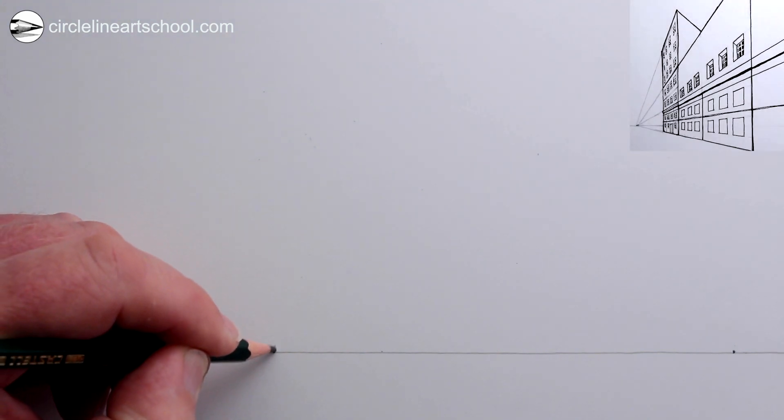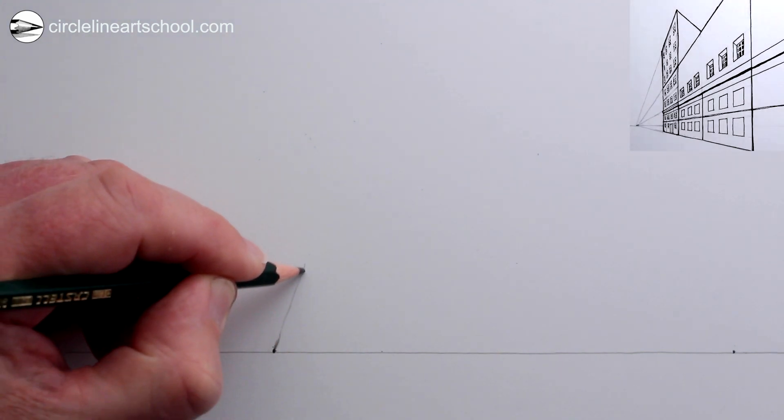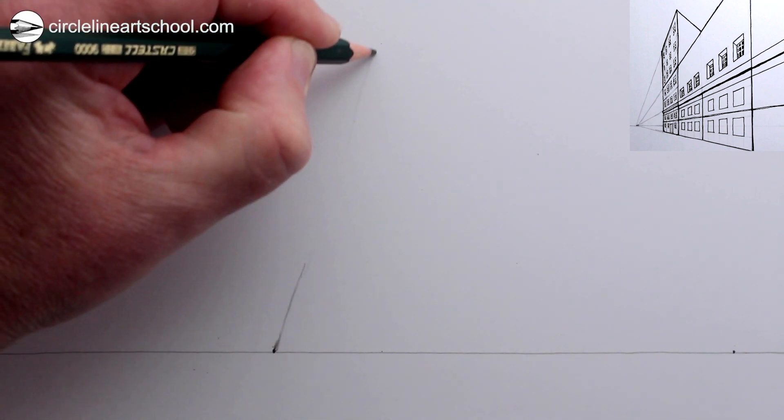Next draw two dots for the two vanishing points on this horizon line, one near the center of your drawing and one towards the far right. Next from the center vanishing point, draw a straight line going up but to the right a bit as well.